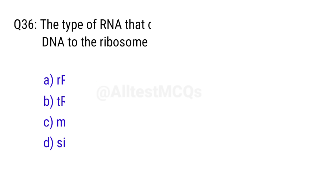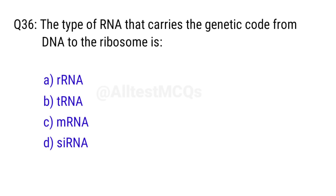Q36. The type of RNA that carries the genetic code from DNA to the ribosome is? Right answer is option C, mRNA.